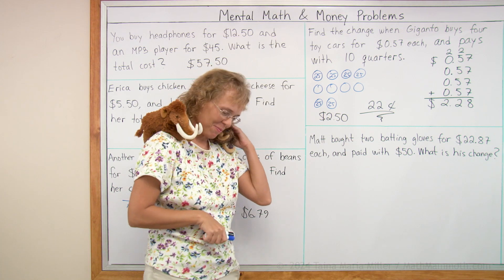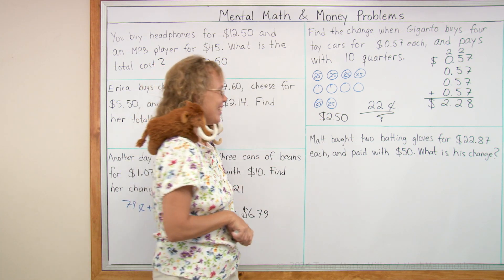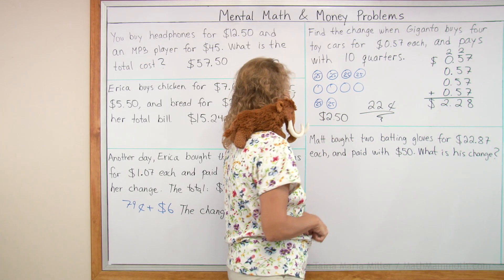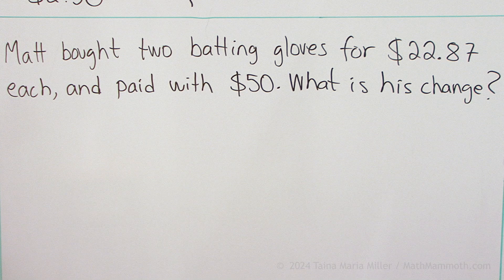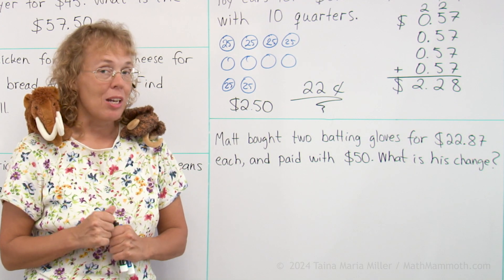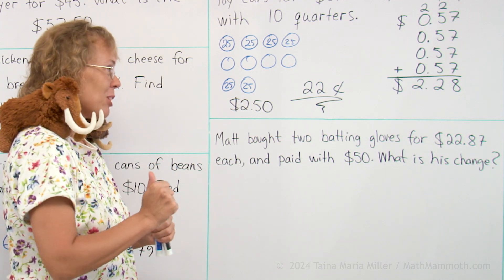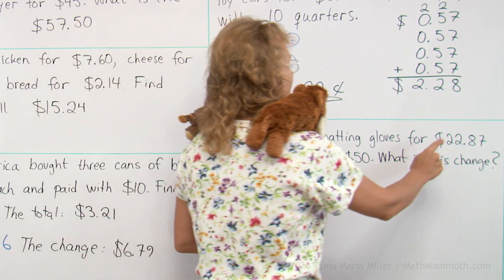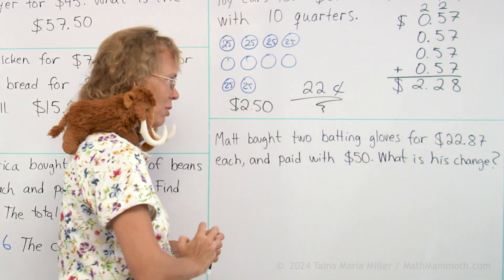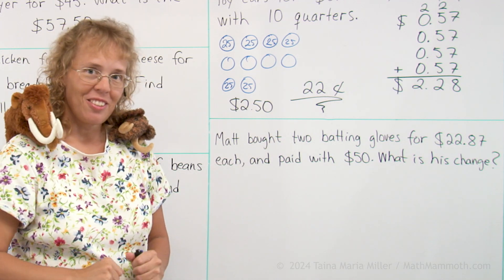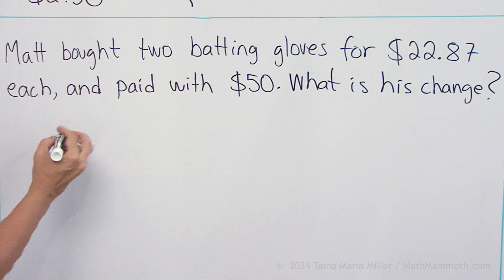So that is his change. Happy? Yeah, he wants to go playing. Now, Matt bought two batting gloves for $2.87 each. He paid with $50. What is his change? This is a fairly easy problem now, right? You know what to do. You have to add to find the total and then figure out the change.